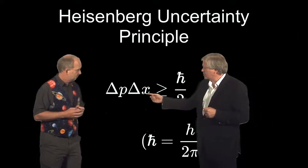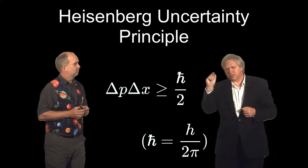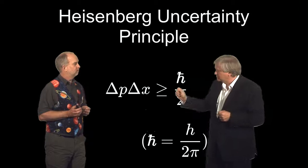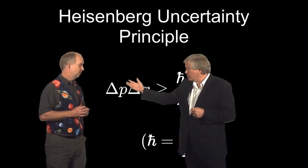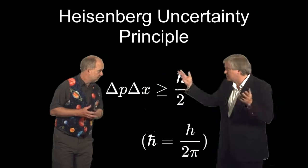Right. So if I can go through and say the uncertainty in the position is tiny, then I'd end up not knowing much at all about its momentum and usually velocity.